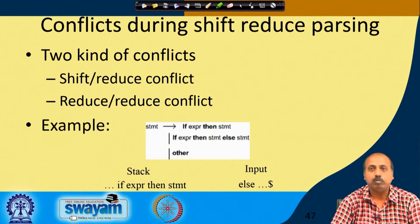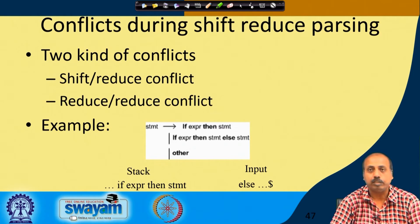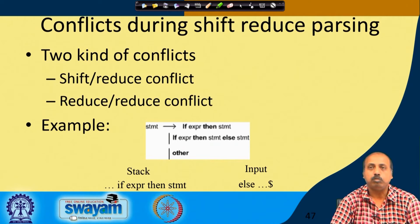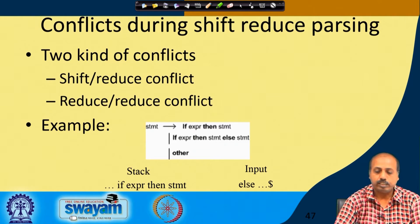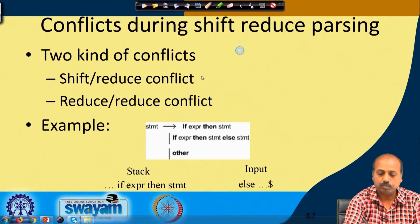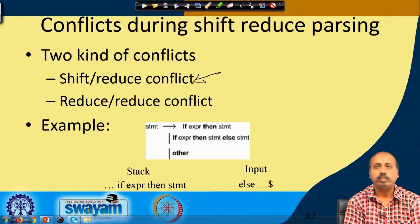Many a time it may happen that there will be a conflict, because depending upon the grammar the parser may not be able to decide uniquely whether to do a shift operation or a reduce operation. That is known as a shift-reduce conflict — where the parser cannot decide whether to shift or to reduce.